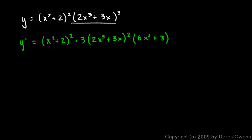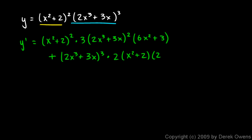What I just wrote was the first times the derivative of the second. Now I need to do plus the second times the derivative of the first. So plus the second, which is 2x cubed plus 3x cubed, times the derivative of the first — that involves the chain rule again: 2 times x squared plus 2 to the power of 1, times the derivative of the inner function, which is 2x. You could factor this, but I'm going to leave it. The factoring and simplifying is more of an algebra exercise — we're staying focused on the calculus here.